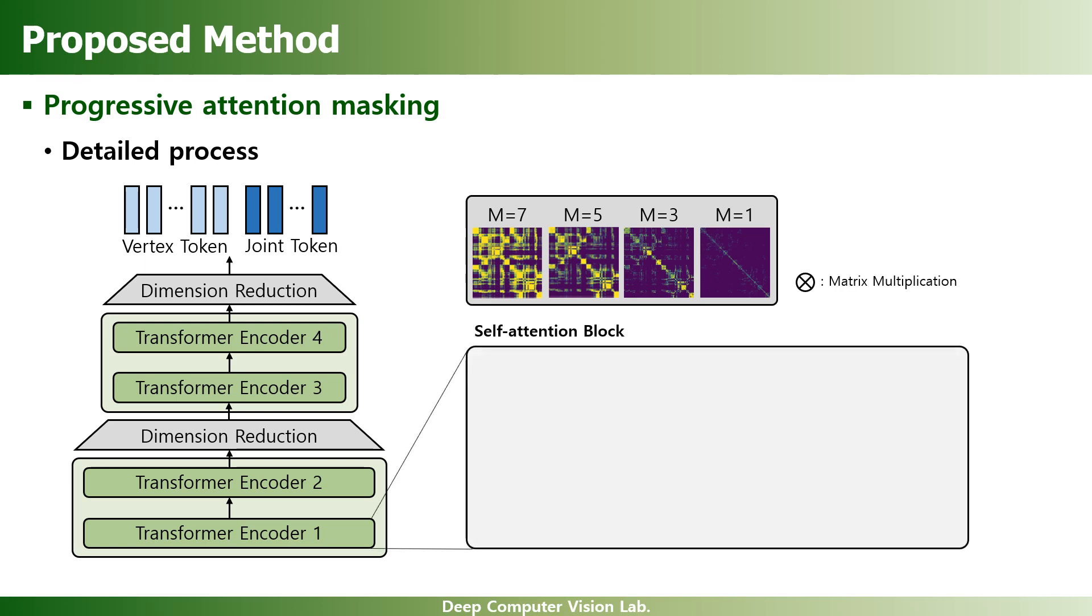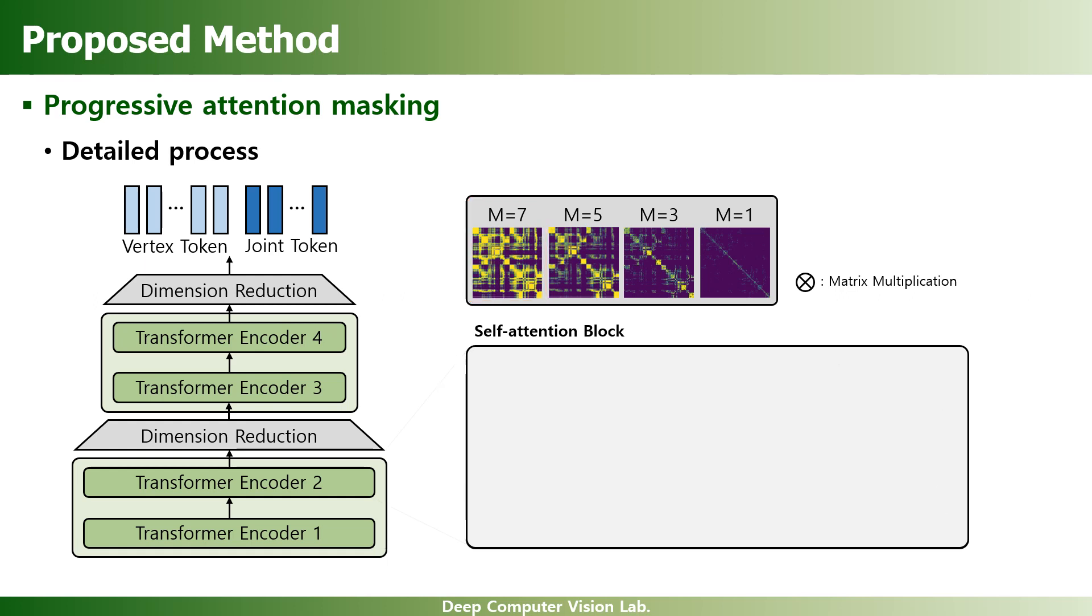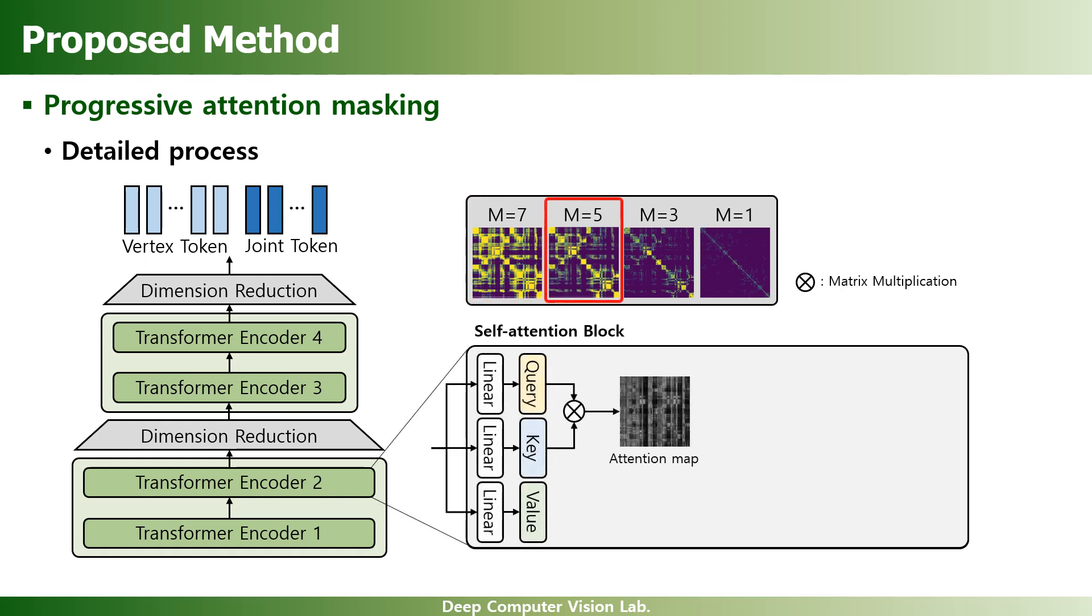These matrices are utilized to mask the attention map when conducting the self-attention in the transformer encoder. Each transformer encoder uses the mask with a different number of connections, where the number is progressively decreased.